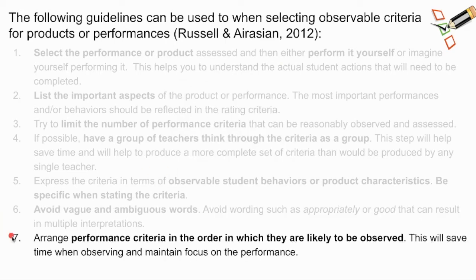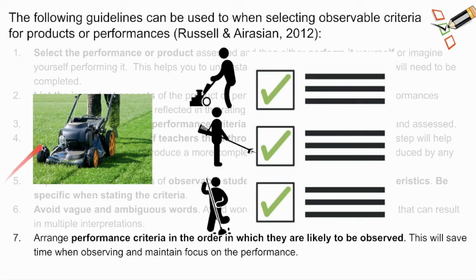We also need to arrange performance criteria in the order in which they are likely to be observed. One reason for this is that it saves time when we observe and allows us to maintain focus on the performance. Going back to the lawn mowing example, we'd put the criteria in likely order of observation: first cutting the grass, followed by doing the edges and weed eating, and at the end doing all of the cleanup.